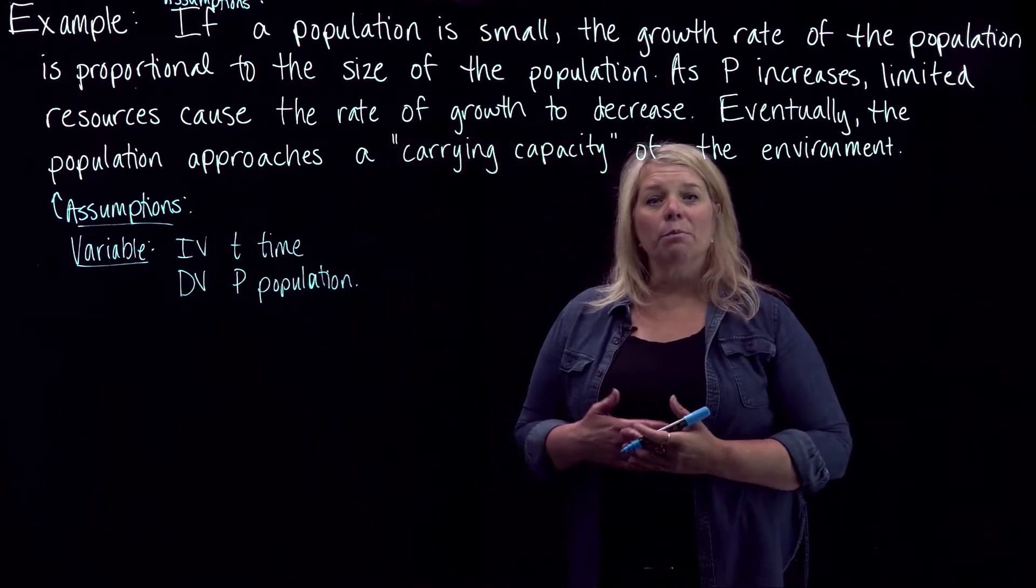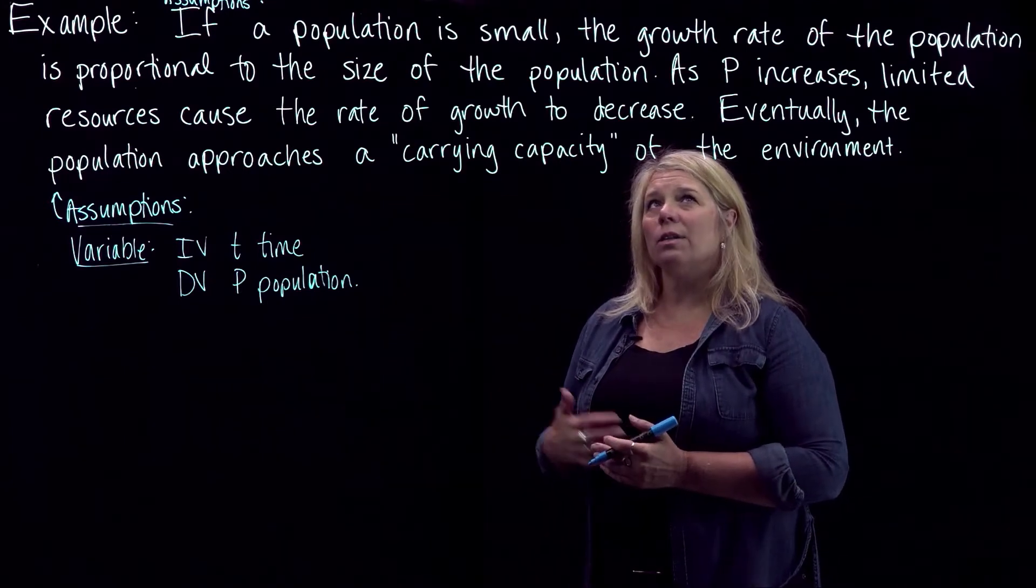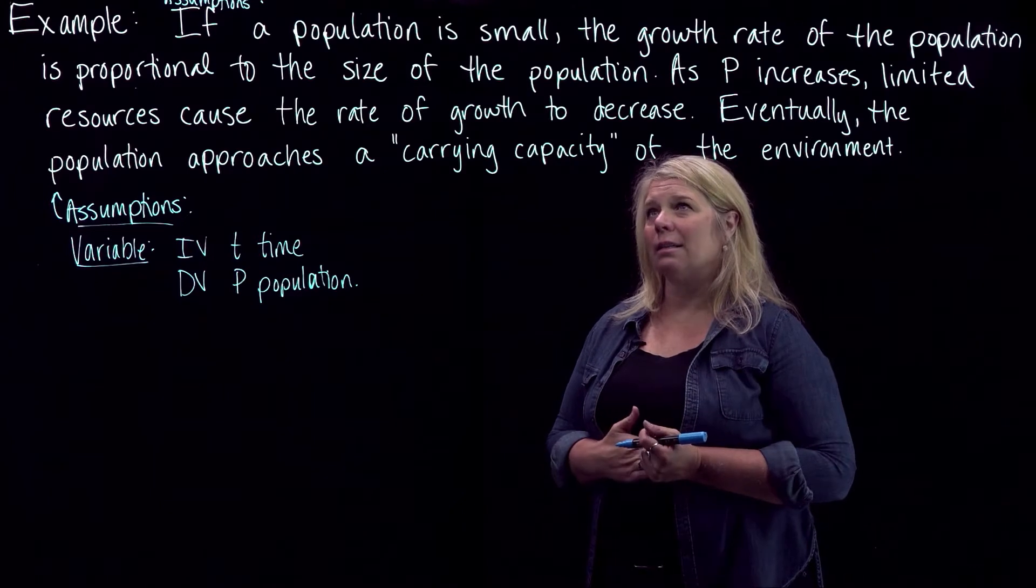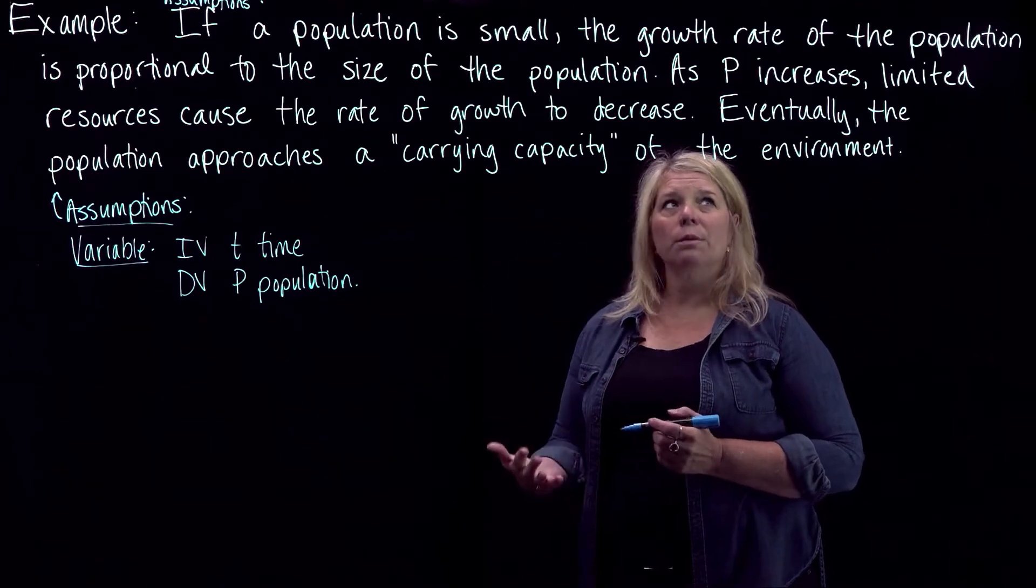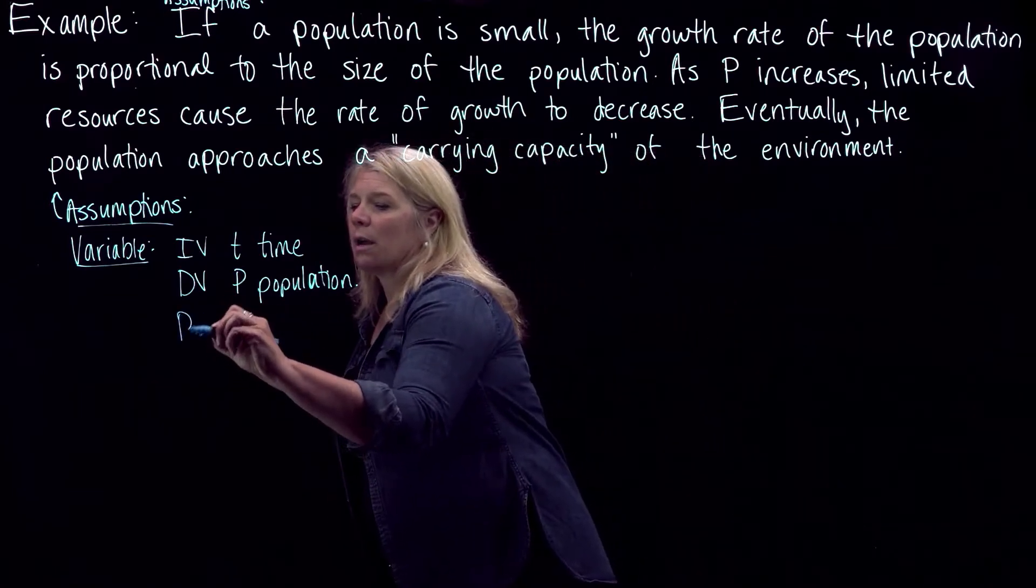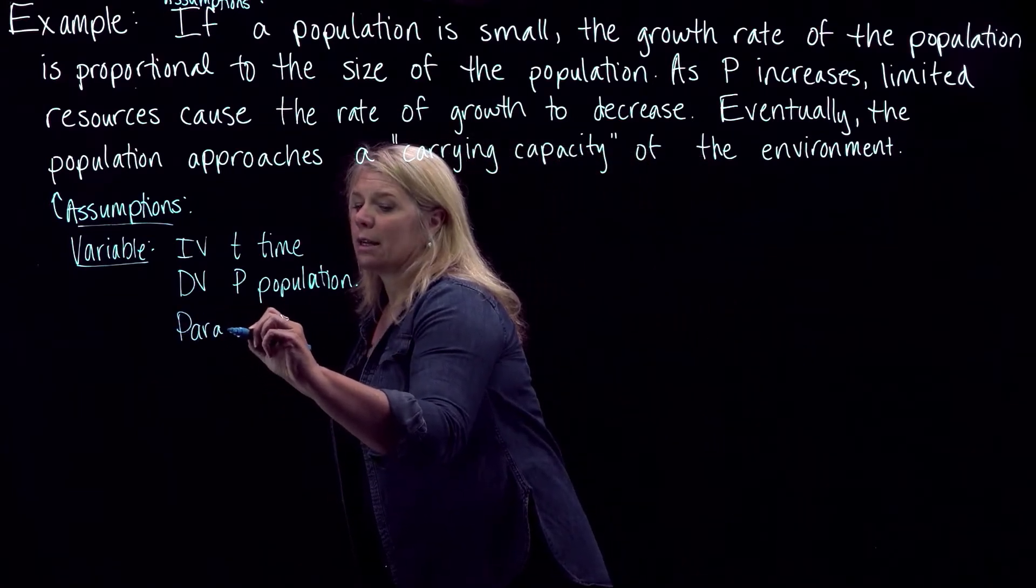And we have some parameters to think about here. So in this case, we actually have another parameter that we didn't have in the last example. If a population is small, the growth rate of the population is proportional to size of the population. So we have that constant of proportionality.